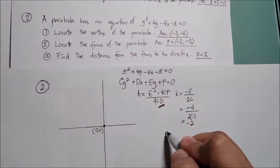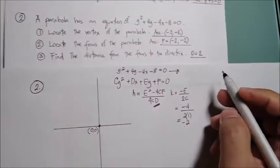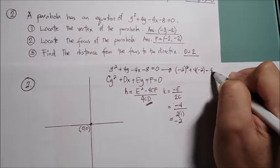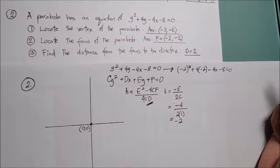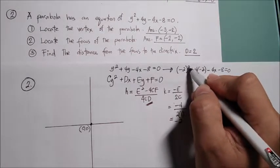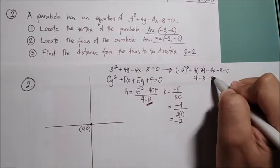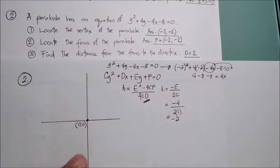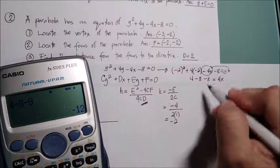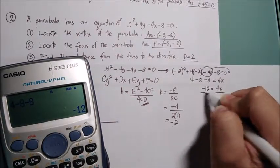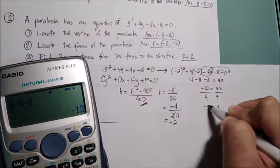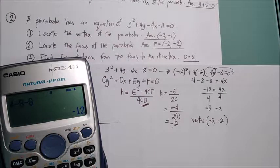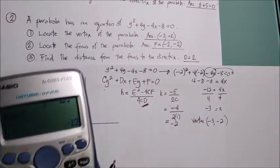With k = −2, substitute y = −2 into the equation: (−2)² + 4(−2) − 4x − 8 = 0. So: 4 − 8 − 8 = 4x, giving −12 = 4x, therefore x = −3. The vertex is (−3, −2). Confirmed: the vertex is at (−3, −2).